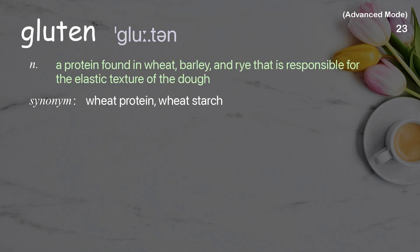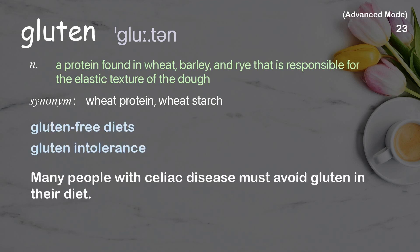Gluten: A protein found in wheat, barley, and rye that is responsible for the elastic texture of the dough. Examples: Gluten-free diets. Gluten intolerance. Many people with celiac disease must avoid gluten in their diet.